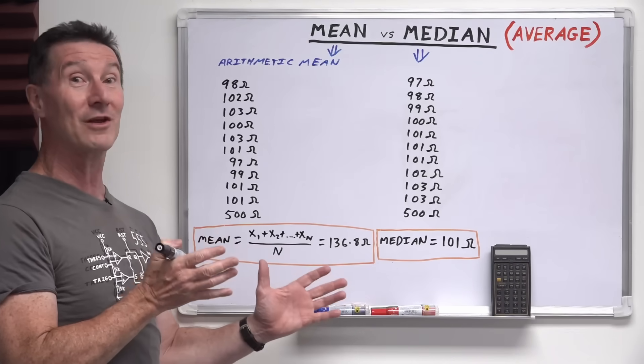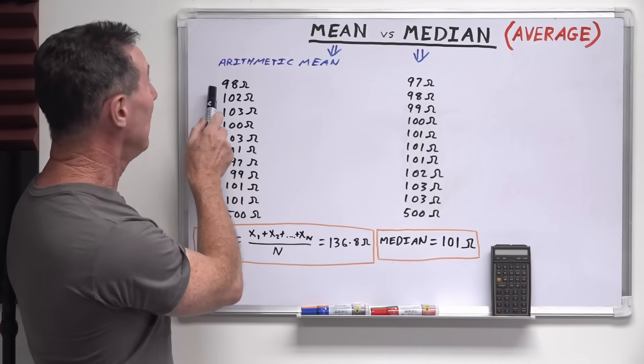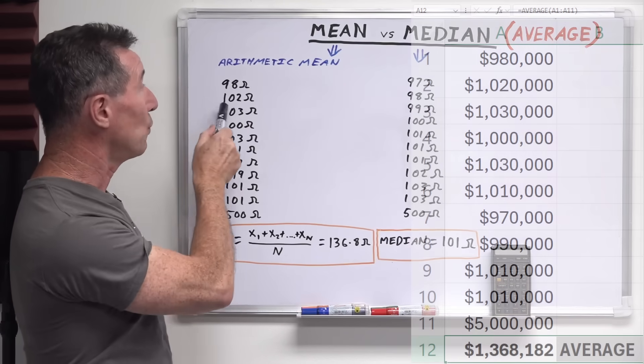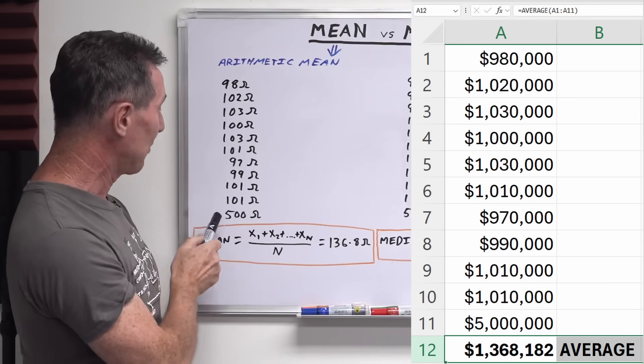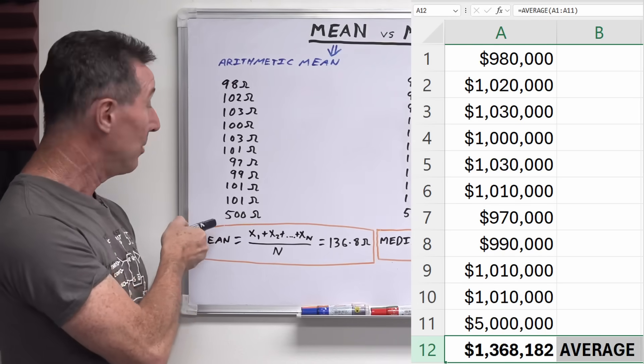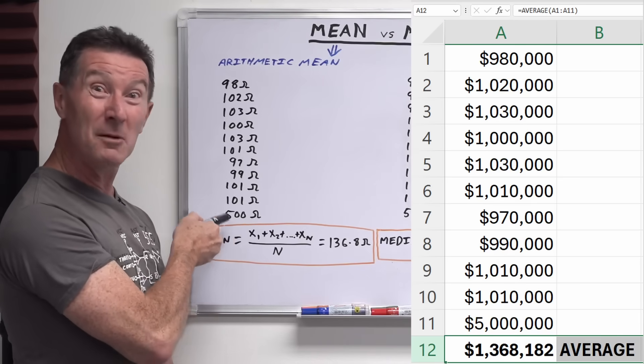So let's take the classic example of home prices. You're almost certainly familiar with this because you hear it all the time every day in the legacy media. Let's say these are house prices, 980,000, 1.02 million, 1.03 million, 1.01 million, and some richy rich down here in your suburb has just sold their McMansion for 5 million bucks.